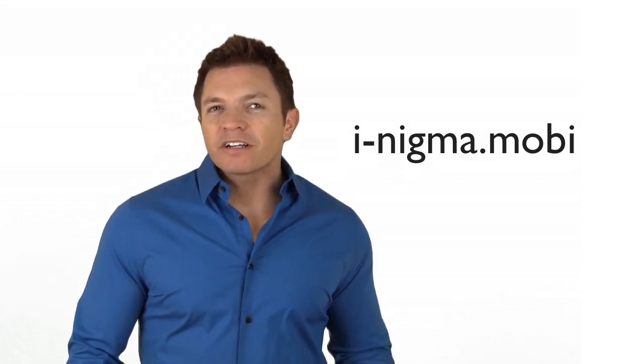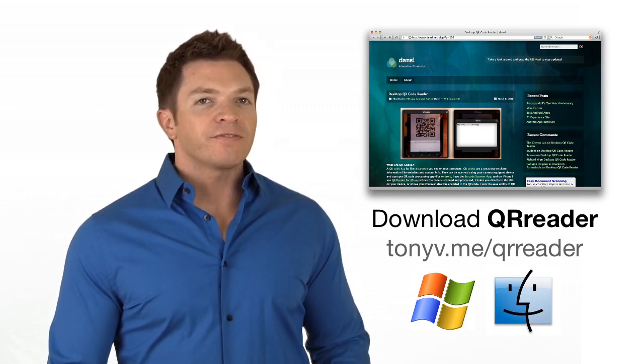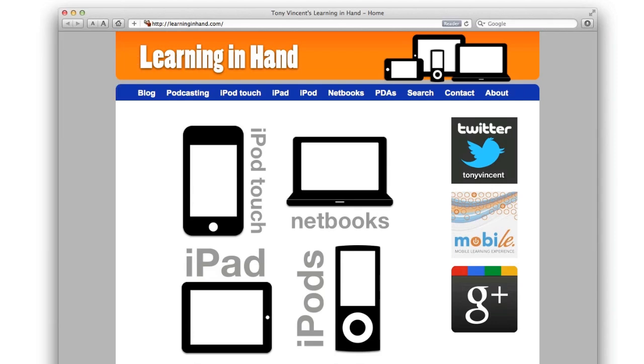While scanning works best on a mobile device, you can use software on Windows or Mac computers to scan codes. QReader is free and uses a computer's webcam. Simply hold up a QR code in front of the camera, and it is scanned. QReader can open URLs automatically in your web browser. After you have a reader, it's time to get scanning.